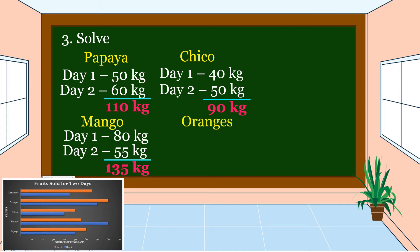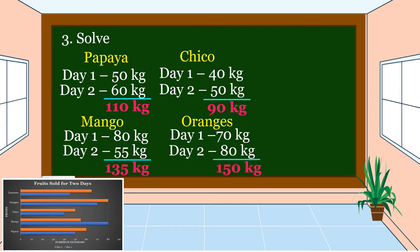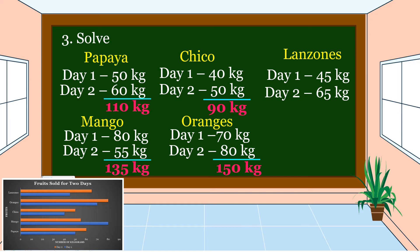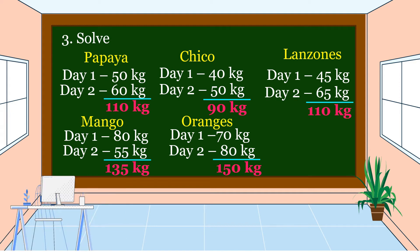For oranges: 70 kg + 80 kg = 150 kg. For lanzones: 45 kg + 65 kg = 110 kg. Therefore, as we can see in the results, the fruit that has the greatest number of kilograms sold is oranges.